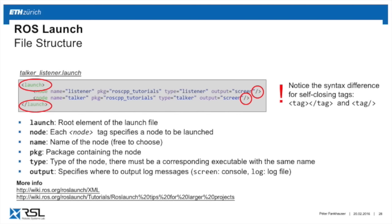Looking at the talker_listener launch file, you have a launch XML tag at the top and bottom, with two node lines inside to start the two nodes. Each node tag specifies: name — an arbitrary name you choose; pkg — the package name, here roscpp_tutorials; and type — which executable, either listener or talker. The output parameter specifies where to send the output: screen prints to console, or log writes to a log file for debugging.